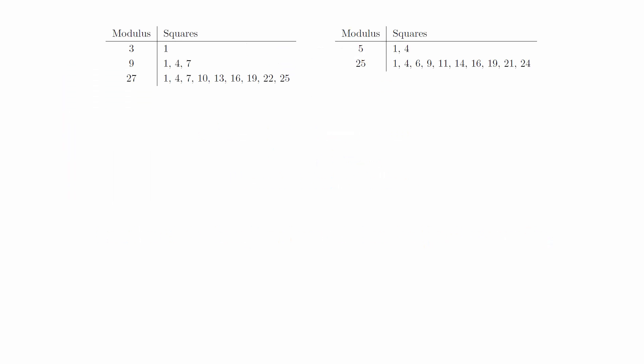These are the lists of perfect squares modulo powers of 3 and 5. The pattern may not be immediately apparent, but if we write out all the elements of Z27 and Z25 in rows of 3 and 5 respectively, it becomes quite clear.